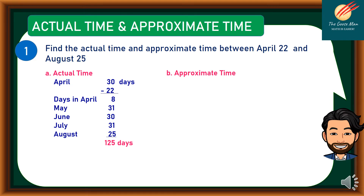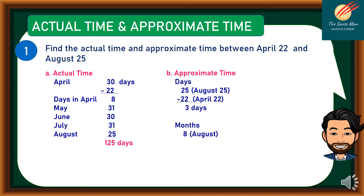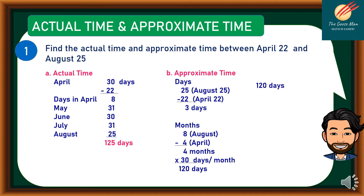On the other hand, for Approximate Time: the days from August 25 minus 22 of April 22, so we have 3 days. Next, let's compute for the months. August is the 8th month minus the 4th month, which is April, so we have 4 months. Four months times 30 days per month gives us 120 days. Adding 3 days and 120 days, we have 123 days. Truly, we can say that the Actual Time is longer than the Approximate Time.